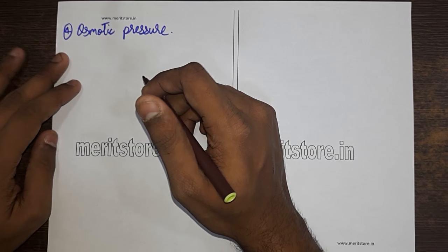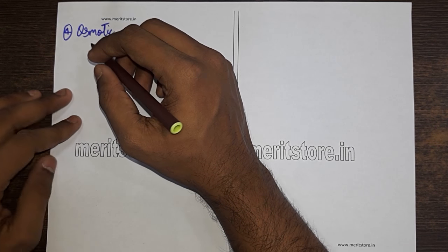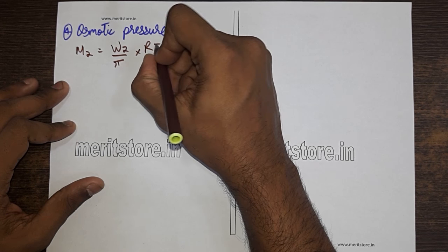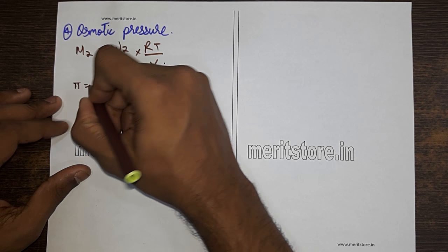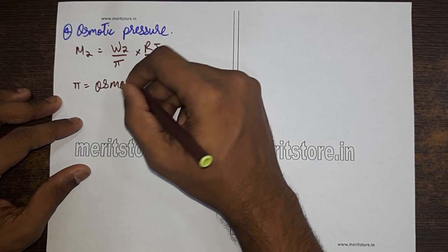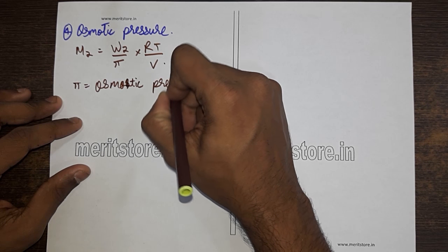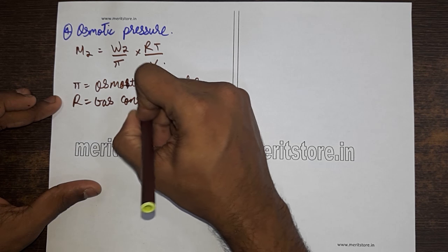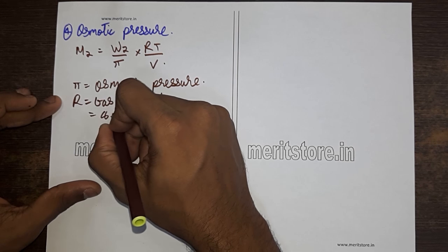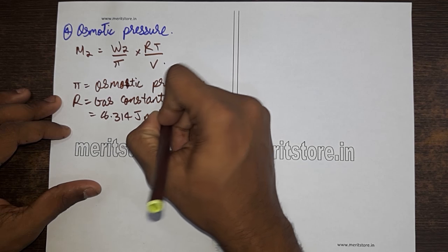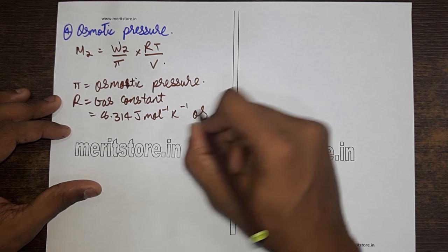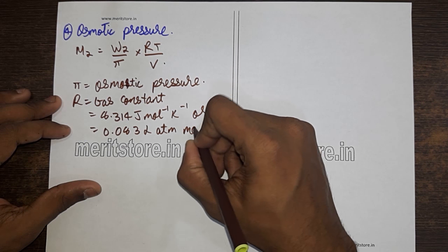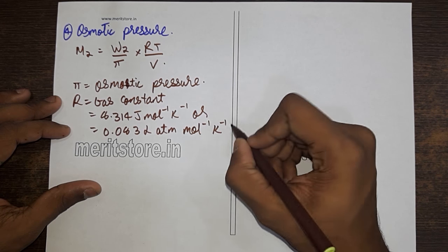The fourth colligative property is osmotic pressure. The formula to determine molecular weight is: m2 is equal to (w2/π)·(RT/V). Here π stands for osmotic pressure, R is the universal gas constant which is 8.314 J per mol per K, or equivalently 0.082 L·atm per mol per K.